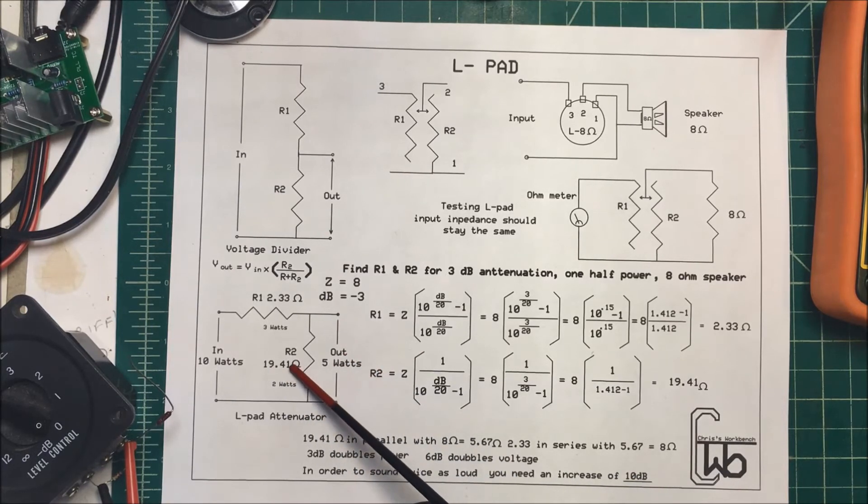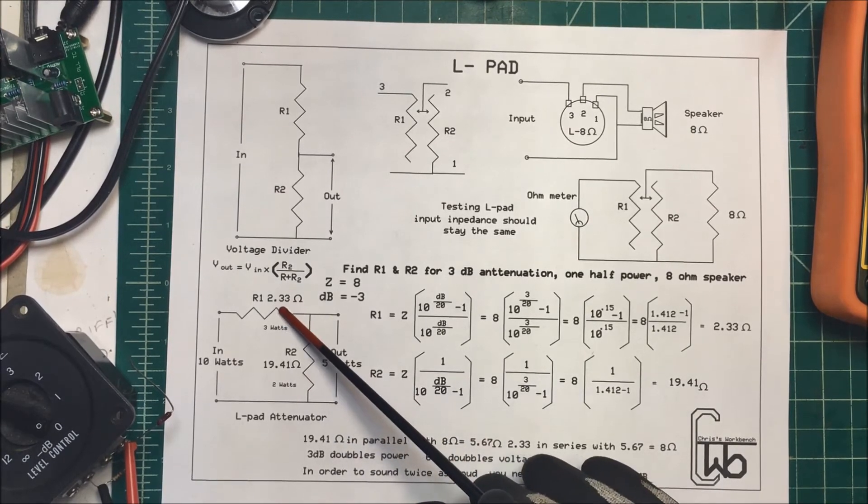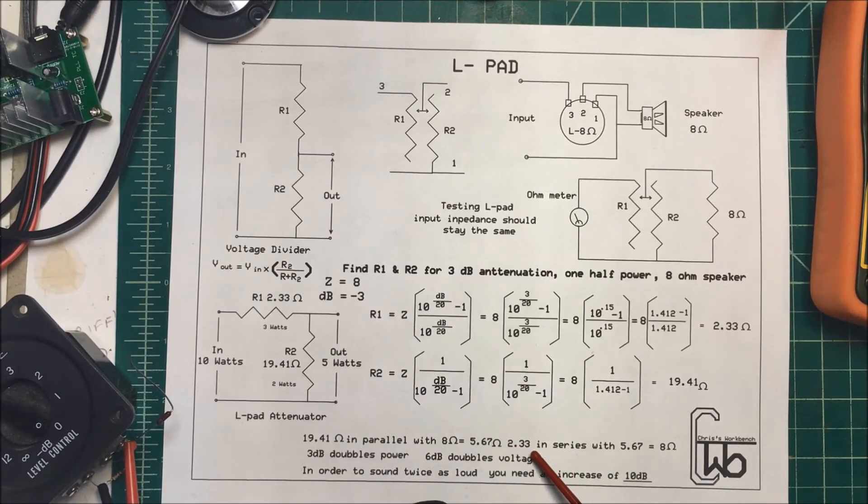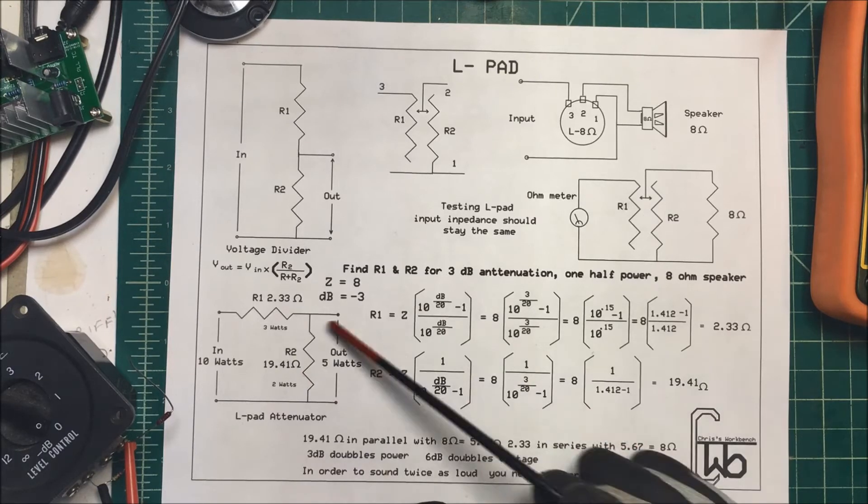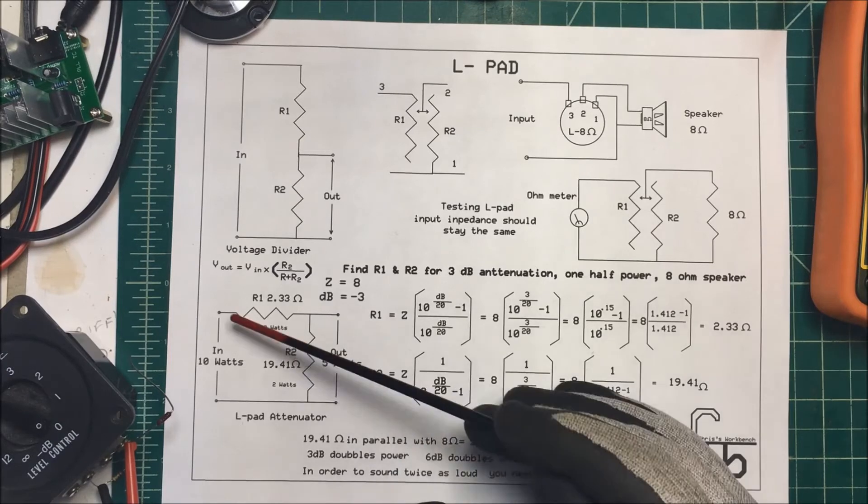So we put 19 ohms in parallel with 8 ohms. That's going to be 5.67 ohms, and that's going to be in series with this 2.33 ohms. If we add those two together it comes out to 8 ohms, so we have our 8 ohms out here. We've maintained that 8 ohms out of our amplifier.